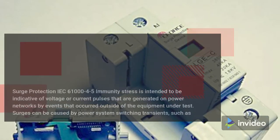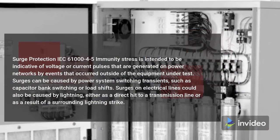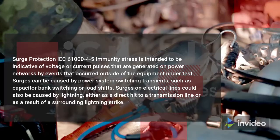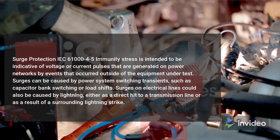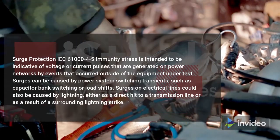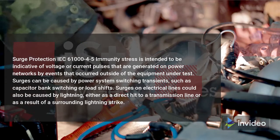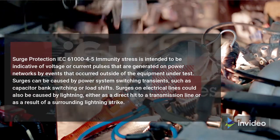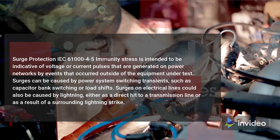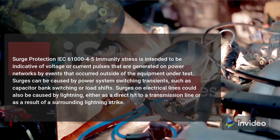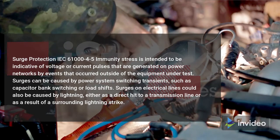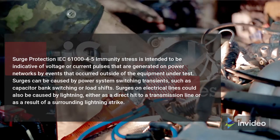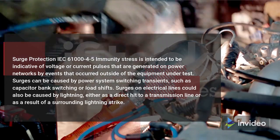Surge protection IEC 61004-5 immunity stress is intended to be indicative of voltage or current pulses that are generated on power networks by events that occurred outside of the equipment under test. Surges can be caused by power systems switching transients, such as capacitor bank switching or load shifts. Surges on electrical lines could also be caused by lightning, either as a direct hit to a transmission line or as a result of a surrounding lightning strike.